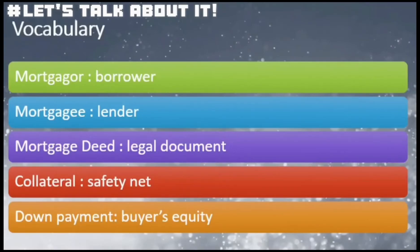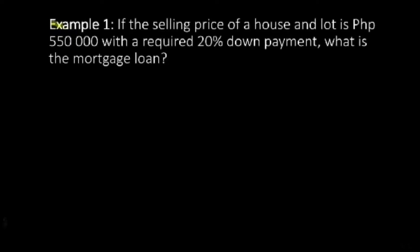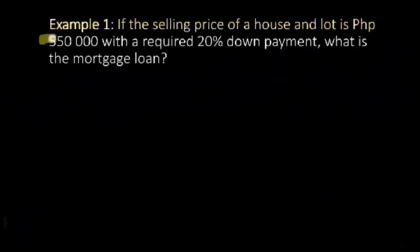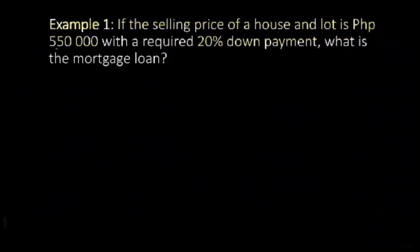Now to understand this better, let's have an example. If the selling price of the house and lot is 550,000 pesos with a required 20% down payment, what is the mortgage loan? Let us first compute the down payment.